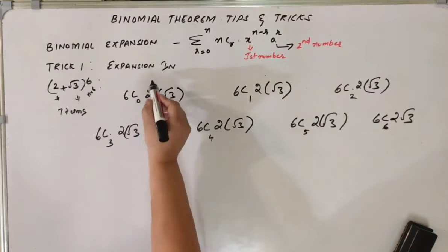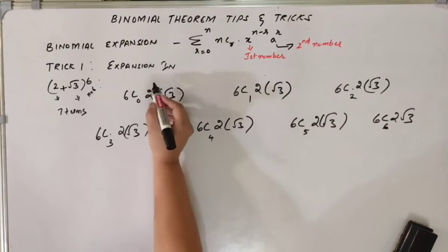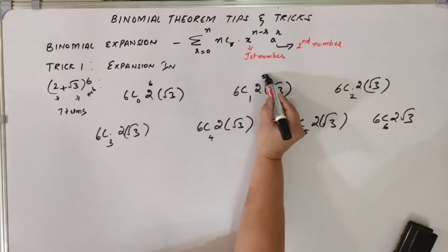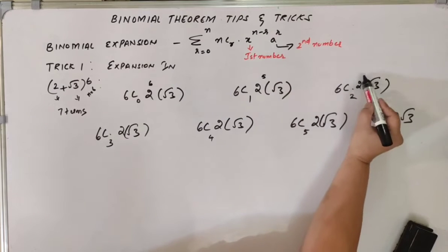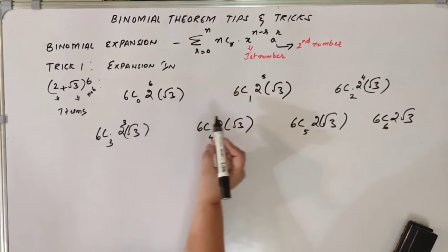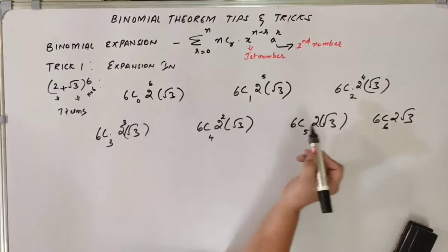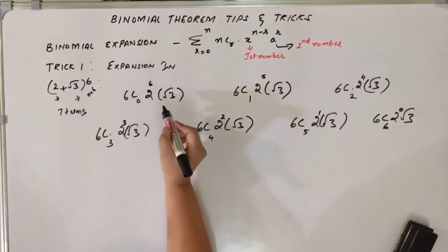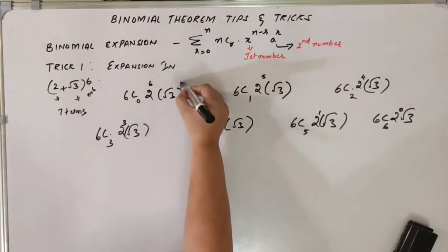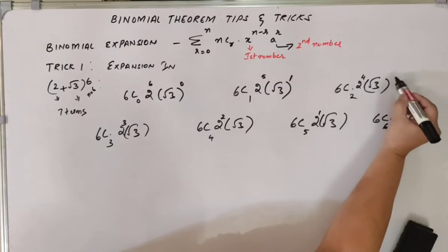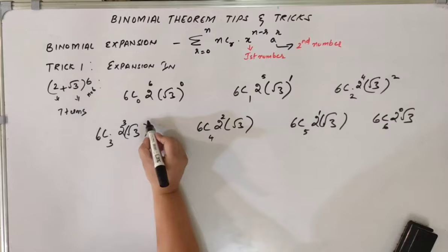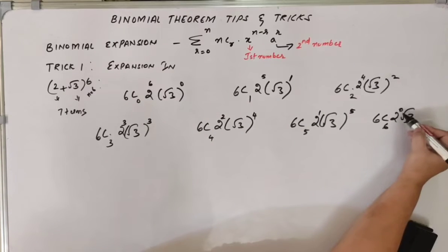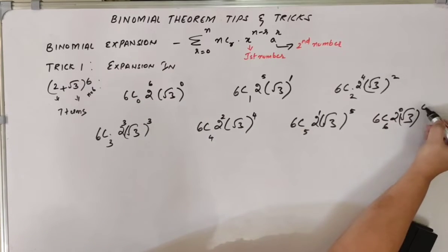Now we write the first term's powers. This starts with 6 and keeps decreasing one by one: 6, 5, 4, 3, 2, 1, 0. For the second term, it starts with 0 and increases: 0, 1, 2, 3, 4, 5, 6.